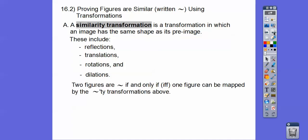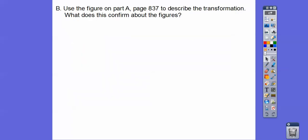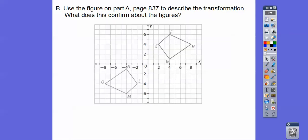Two figures are similar if and only if — abbreviated IFF — one figure can be mapped to the other by one of these similarity transformations: reflections over the x- or y-axis, translations that slide over and up or down, rotations of 90° or 180° clockwise or counterclockwise, and dilations that make figures bigger or smaller.